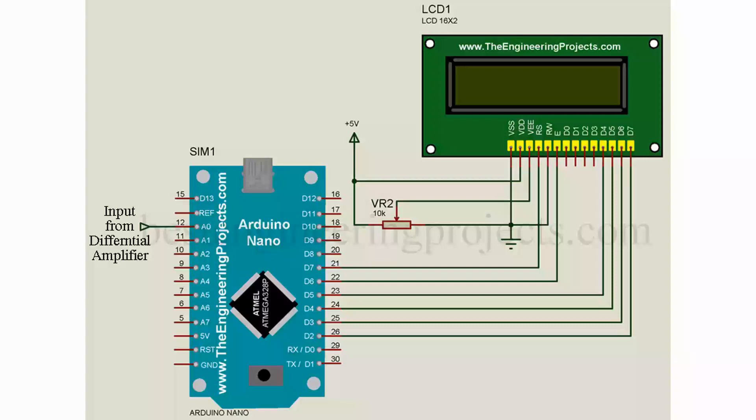The LCD is connected to Arduino in higher order data mode, that is only higher data bits of LCD D4 to D7 are connected to Arduino. The output of differential amplifier is given to analog pin A0.